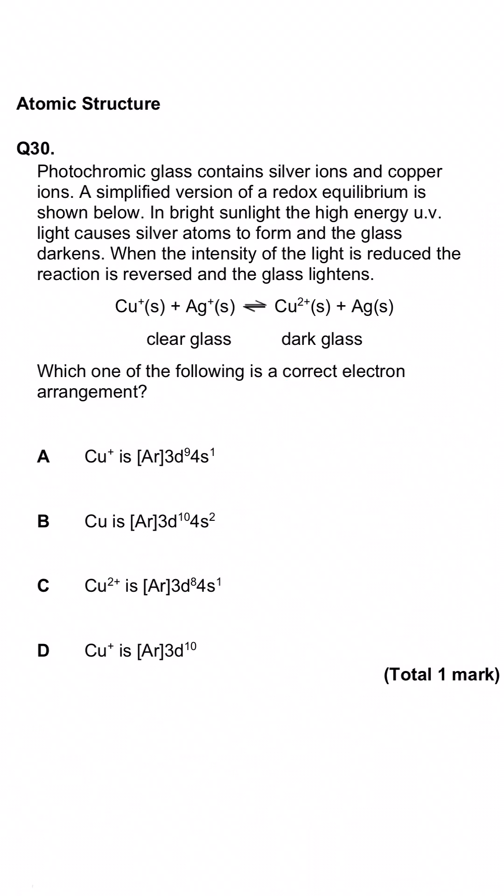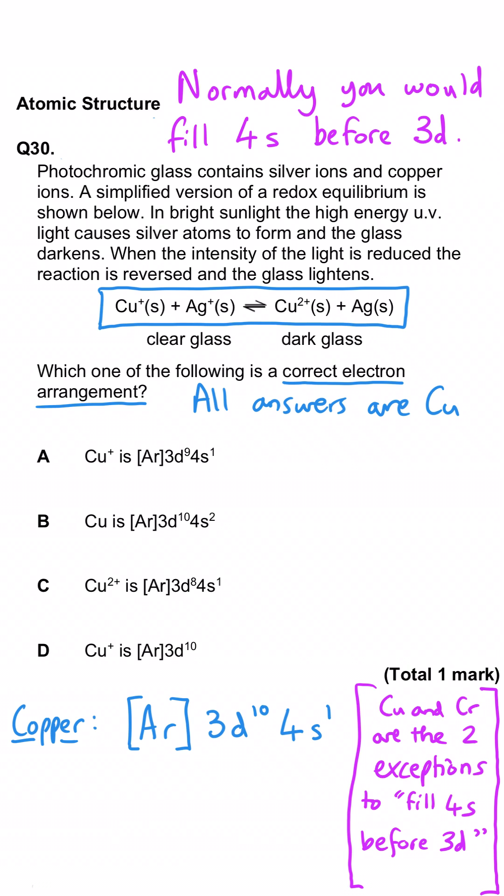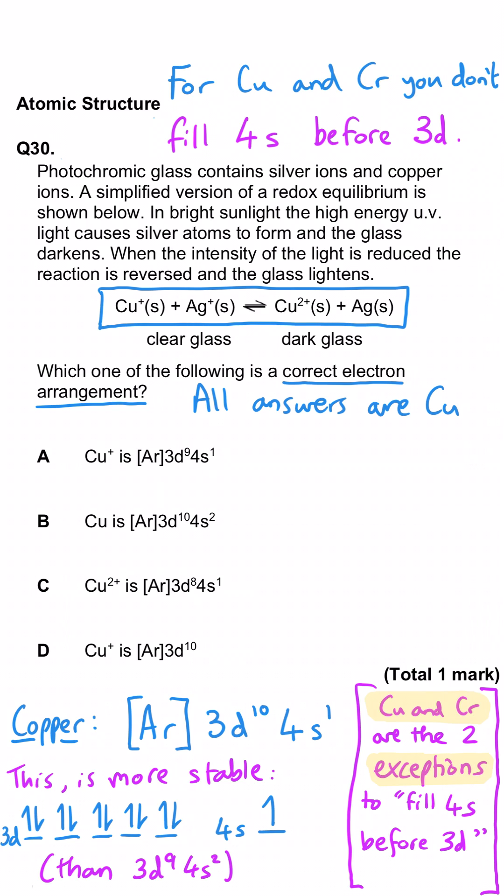This question is telling us about photochromic glass and a reaction between copper ions and silver ions that makes that glass change color and darken. We're actually being asked about the electron configurations not about the chemical reaction itself and they're all for copper so it's worth thinking about copper's ground state as an atom.